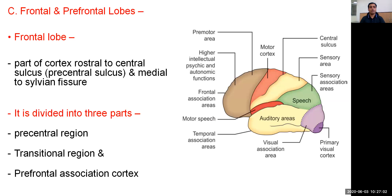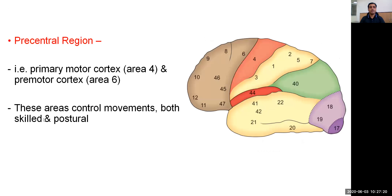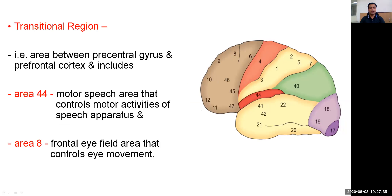Moving on to the frontal and prefrontal lobes. The frontal lobe is the part of the cortex rostral to the central sulcus and medial to the Sylvian fissure. It is divided into three parts: the precentral region, the transitional region, and the prefrontal association cortex. The precentral region includes the primary motor cortex, area 4, and the premotor cortex, area 6, which control movements both skeletal as well as postural.